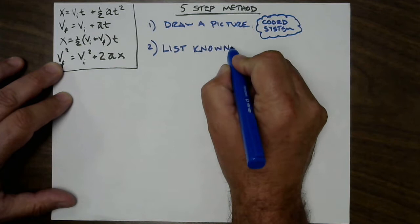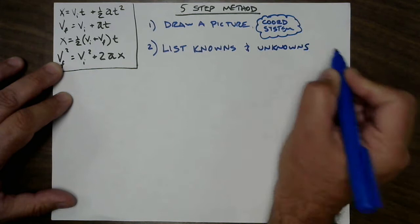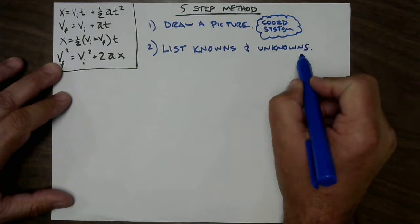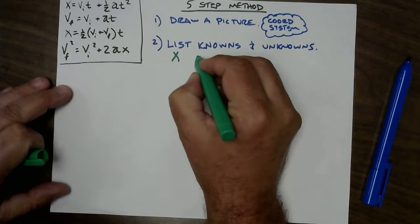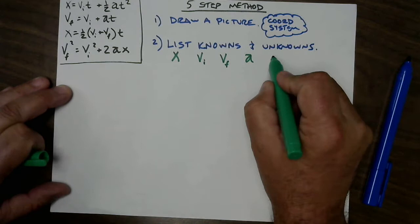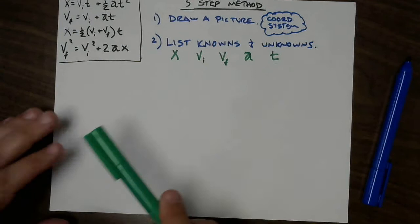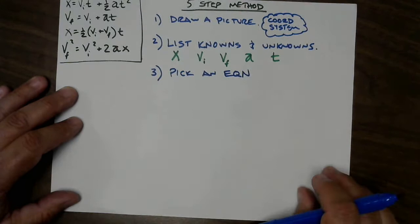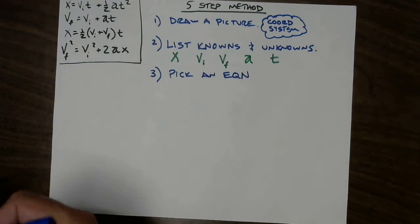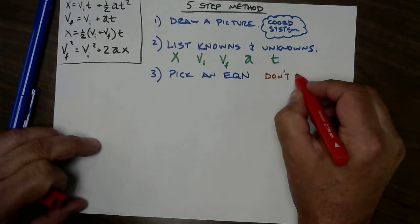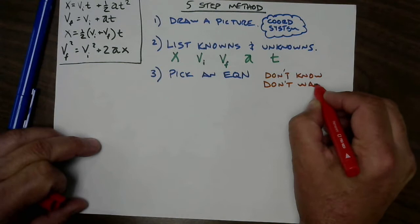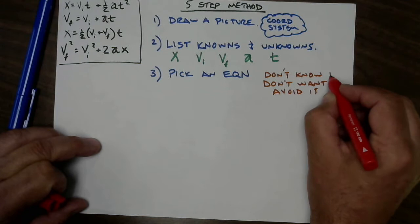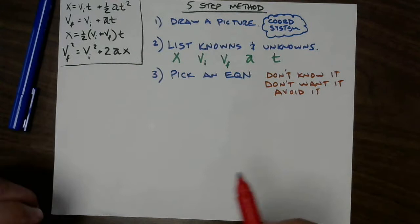Step two: make a list of the knowns and unknowns. It's always the same five-variable list — either you know them and write a number, or you don't and write a question mark. Step three: pick the correct equation. Use my 'triple negative' system: if you don't know it and you don't want it, then you must avoid it. Pick the equation that excludes the variable you don't know and don't need.